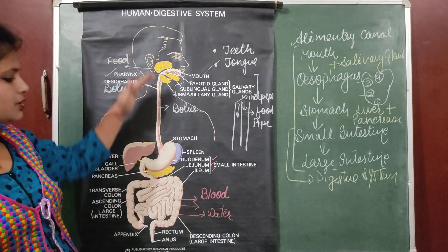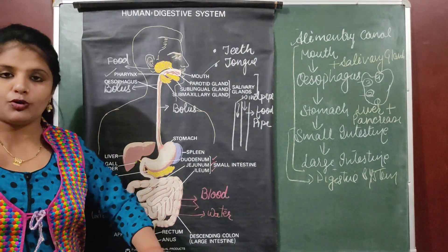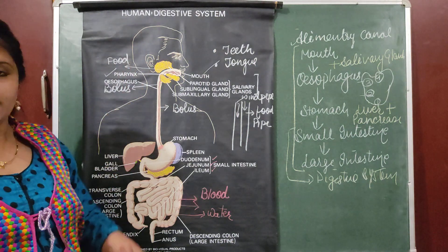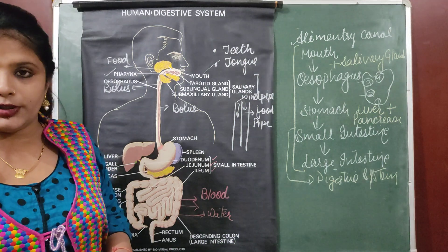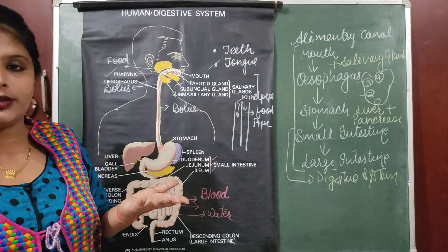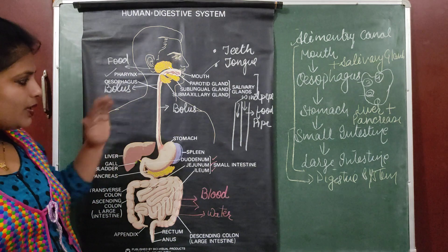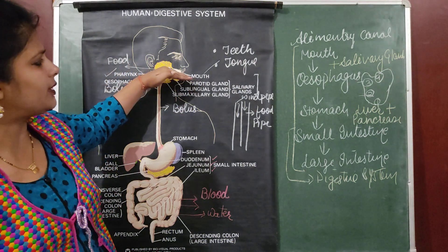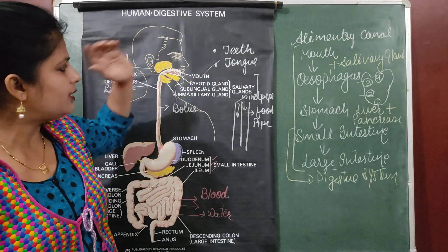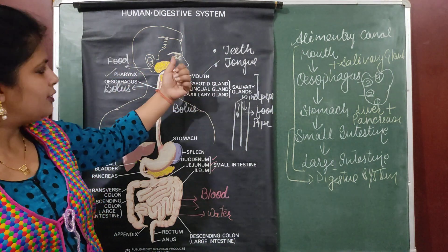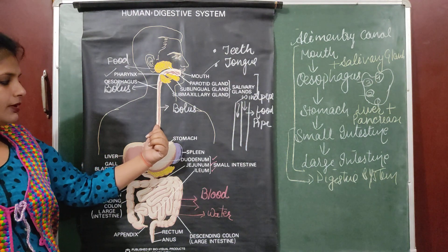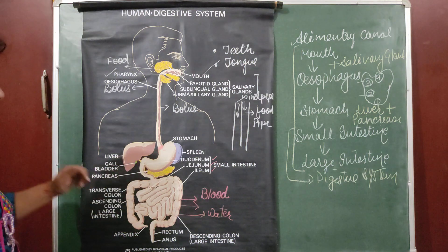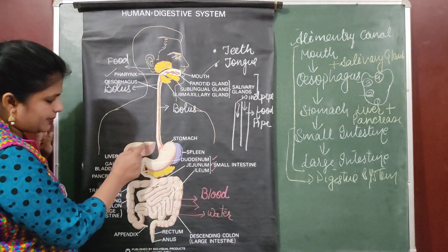This was the overview of the human digestive system model, which is part of your practical file. You are supposed to draw the diagram of the digestive system in your practical file and explain all the parts — the entire explanation is given on page 134, from where you can take ideas. For a final recap: food enters the mouth, where we have teeth, tongue, and salivary glands; from there it enters the esophagus, and from the esophagus into the stomach.